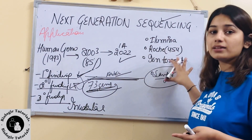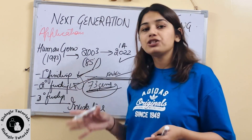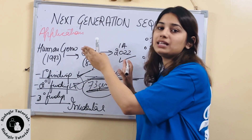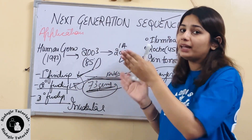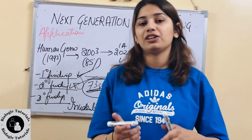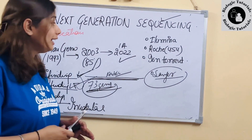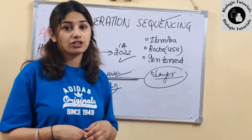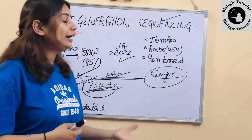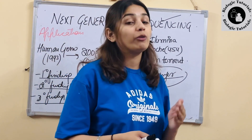Toh next generation sequencing se hum genetic testing mein person ki primary, secondary aur tertiary finding karte hain, jahaan pe hum uski sequencing ko jo humare paas proper sequencing library mein hoti hai usse compare karte hain aur pata karte hain kahan pe mutations hain, kahan pe variations hain. Ab iske liye jo aaj humare paas mainly use hoti hain: Illumina, jo next generation sequencing ke liye use hoti hai; Roche 454 use hoti hai; aur Ion Torrent use hoti hai. In sabhi ke principles aur inke mechanism of action sab ka different rehta hai.